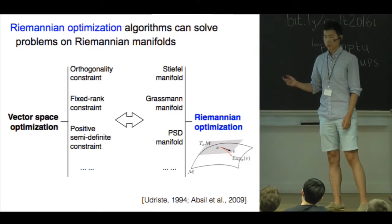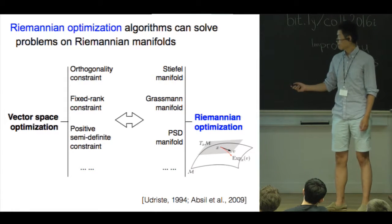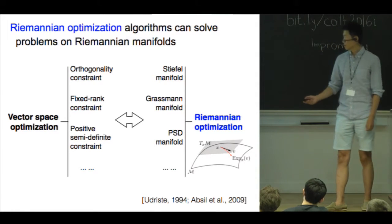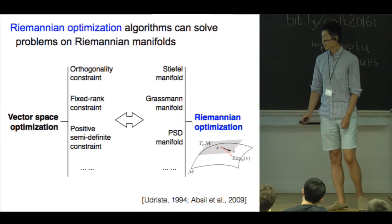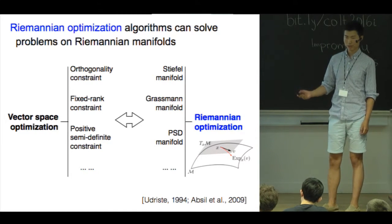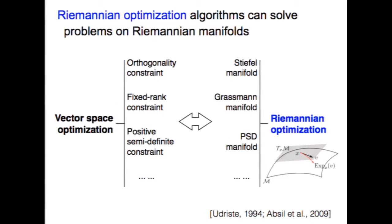For example, orthogonality constraint corresponds to a Stiefel manifold which appears in principal component analysis and canonical correlation analysis. Fixed-rank constraint corresponds to a Grassmann manifold which appears in low-rank matrix factorization and completion. And the positive semi-definite constraint corresponds to PSD manifold which appears in covariance matrix estimation, learning elliptical contour distributions, as well as learning mixture models.